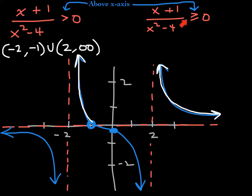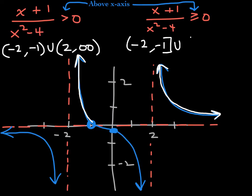For the non-strict version, it's still the same question — when is it above the x-axis — but since it's non-strict, I can put a bracket on my x-intercept only. The x-intercept is negative 1, so the answer will be the same as before, just with a bracket at the x-intercept. So the answer would be negative 2 to negative 1 with a bracket, union, parenthesis 2 to infinity. You must put parentheses at negative 2 and positive 2 because those are your vertical asymptotes.